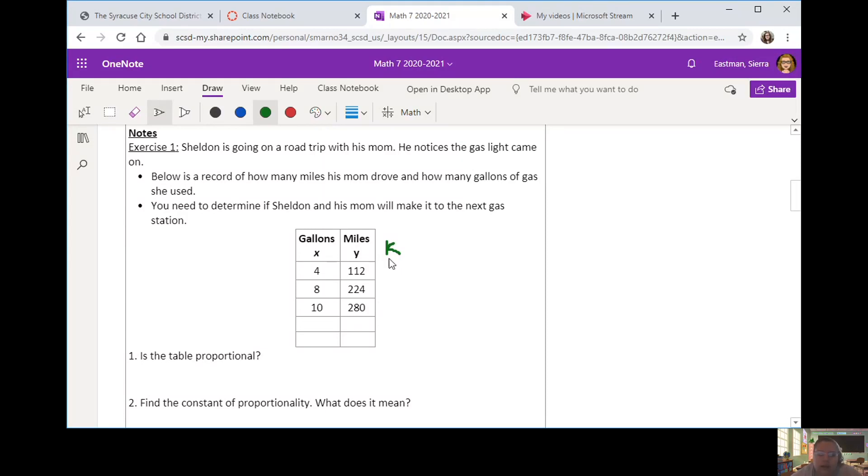All right, so let's check 112 divided by 4 and I have my calculator next to me that's helping me just make sure I'm doing this correctly. 112 divided by 4 gives me a 28. 224 divided by 8 also gives me a 28. And then 280 divided by 10, that one also gives me a 28. So is this table proportional? Yes, it is.